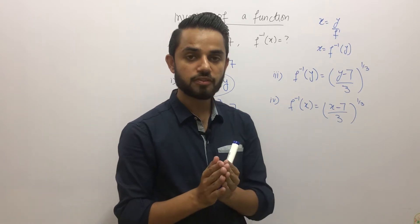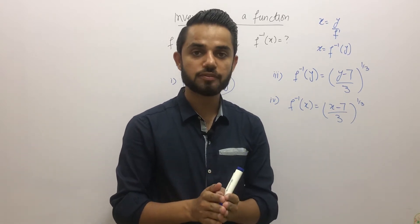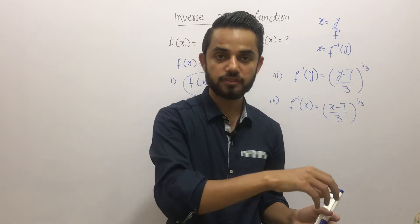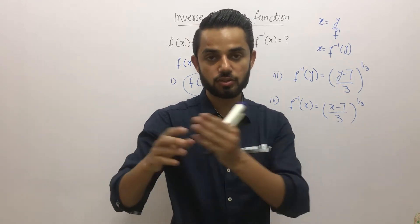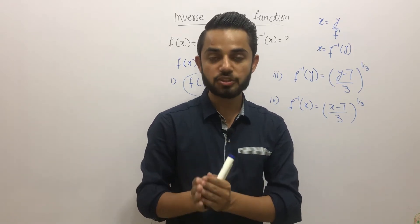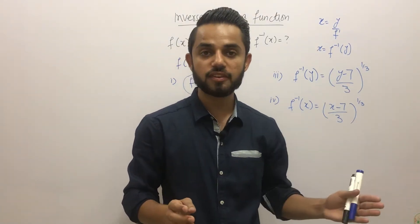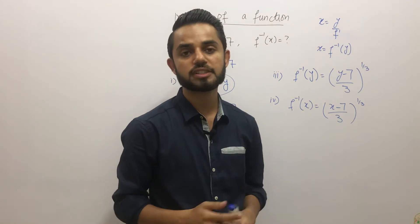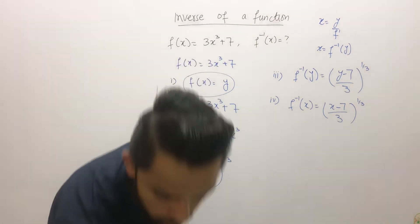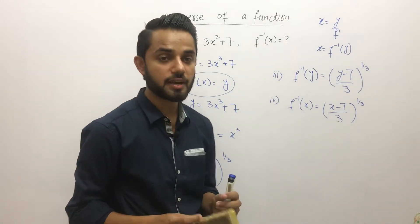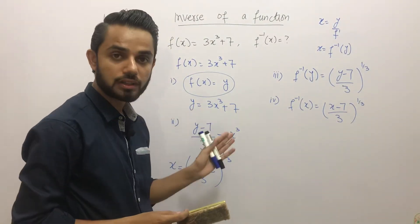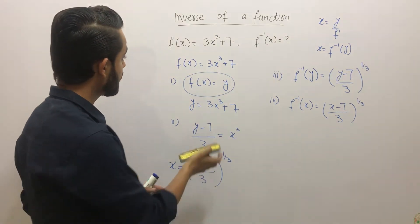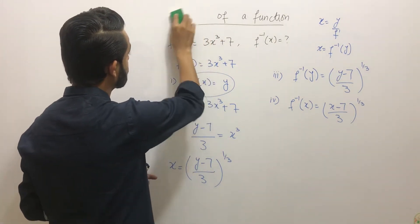A composition of functions works like this: suppose you have two functions f(x) and g(x). When you substitute one function into another, that is called the composition of functions. There are different notations for writing it, which we will discuss. Make sure you have your copy and pen ready and are noting down all these steps.